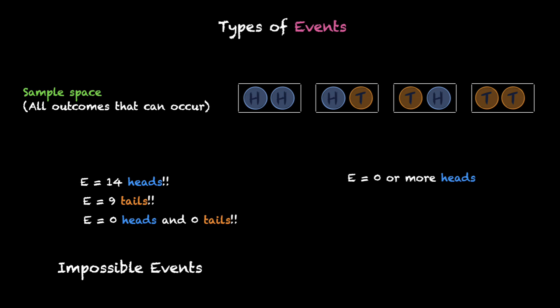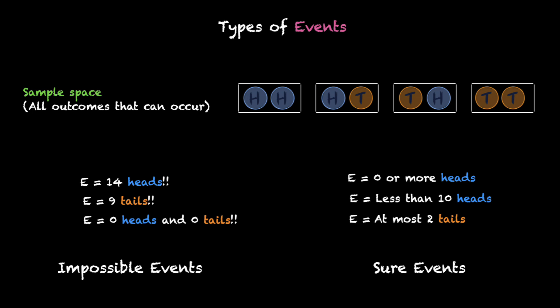Let's look at a few more examples. Another event E which says zero or more heads, another one: less than 10 heads, one more: at most two tails. Are these events possible? Yes, of course they're possible. In fact, they're always going to happen. We're always going to have zero or more heads, we're always going to have less than 10 heads, and we're always going to have at most two tails. So these events are called sure events.